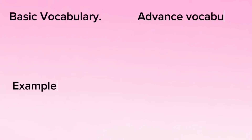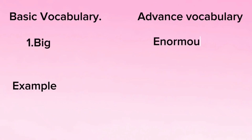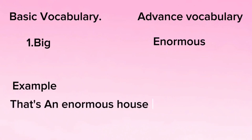Basic Vocabulary vs. Advanced Vocabulary. Number 1. Big — Enormous. For example, that's an enormous house.